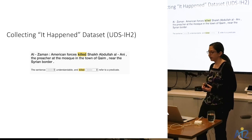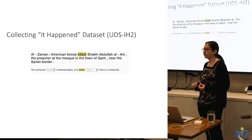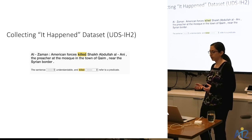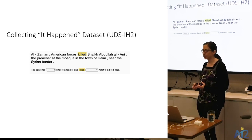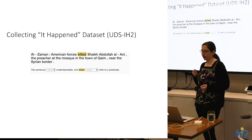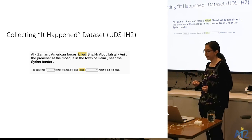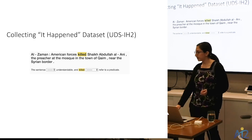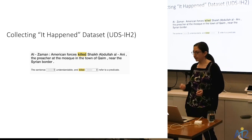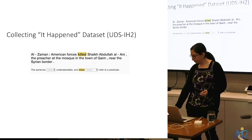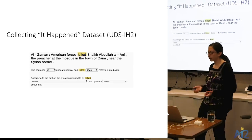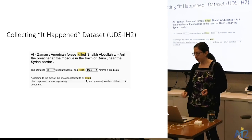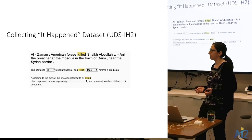Once we have tokens representing events identified, we have annotators decide whether or not those events happened. We present annotators with sentences and a highlighted token representing the event. We ask: first, is the sentence understandable and does the highlighted word refer to a predicate? Second, according to the author, is the situation referred to by the highlighted word something that happened or not, and how confident are you?